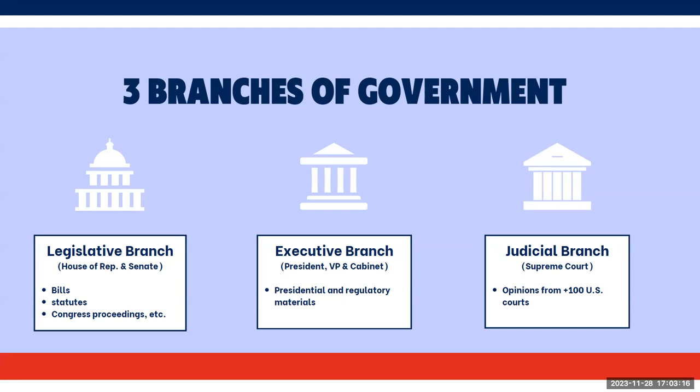The judicial branch, which is the Supreme Court, they interpret laws, settle arguments, and the type of information they produce are opinions from more than 100 U.S. courts. Understanding the type of information each branch produces will help you decide where to start your search.